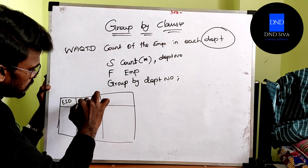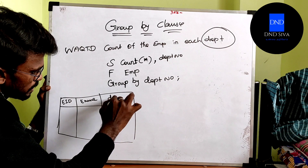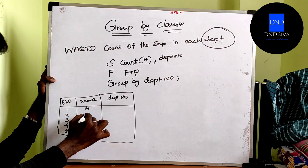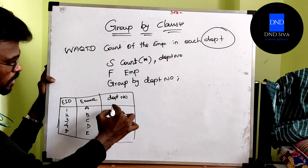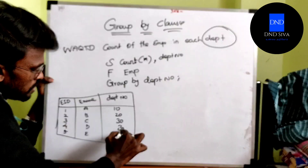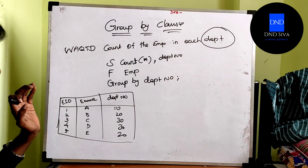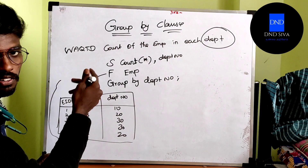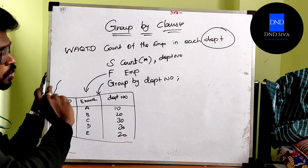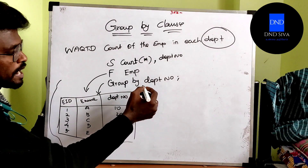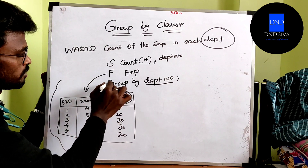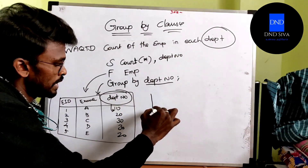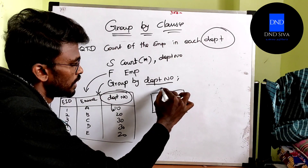Here is a table with EID, Ename, Department, Department Number. Department numbers are 1, 2, 3, 4, 5 with values A, B, C, D, E and department numbers 10, 20, 30. This is a group. To execute, first from the table — the second step is a group. What do you need to do? Department number. Then automatically create a container for department number.